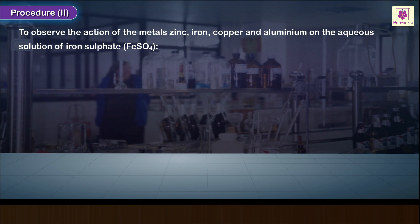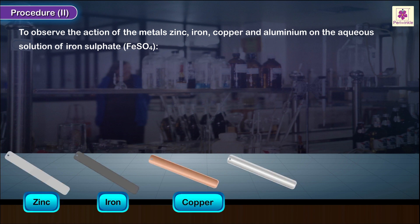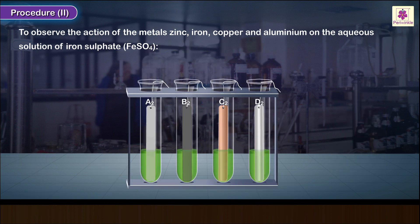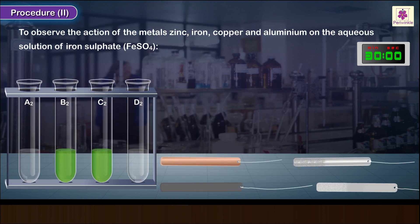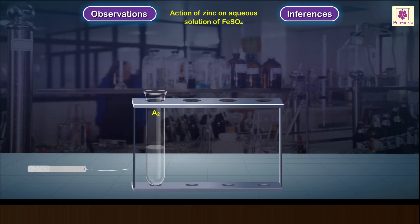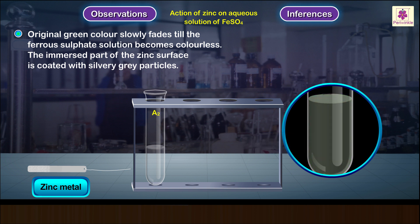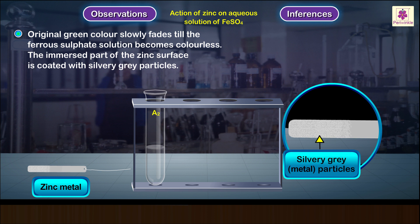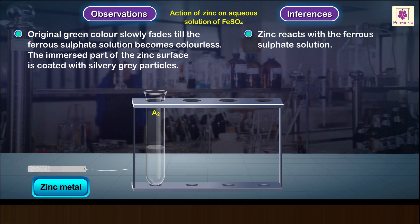Procedure 2: To observe the action of the metals zinc, iron, copper, and aluminum on the aqueous solution of iron sulfate. Repeat Procedure 1 with aqueous solution of iron sulfate instead of zinc sulfate. Carefully pull out each metal strip and observe the surface of the immersed part. Observations — test tube A2 containing zinc metal: the original green color slowly fades until the ferrous sulfate solution becomes colorless. The immersed part of the zinc surface is coated with silvery-gray particles. Zinc reacts with the ferrous sulfate solution.